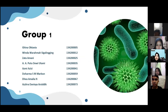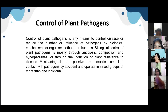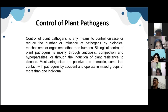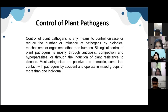Control of plant pathogens is any means to control disease or reduce the number or influence of pathogens by biological mechanisms or organisms other than humans. Biological control of plant pathogens is mostly through antibiosis, competition, and hyperparasitism, or through the induction of plant resistance to disease. Most antagonists are passive and immobile, come into contact with pathogens by accident, and operate in mixed groups of more than one individual.